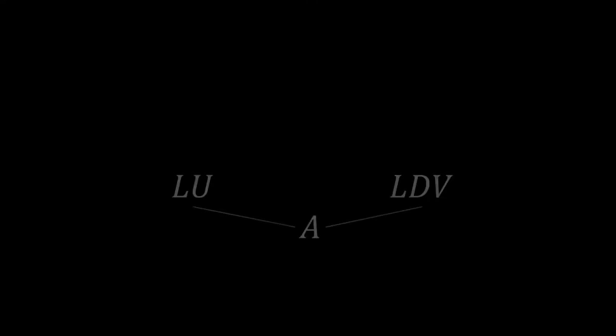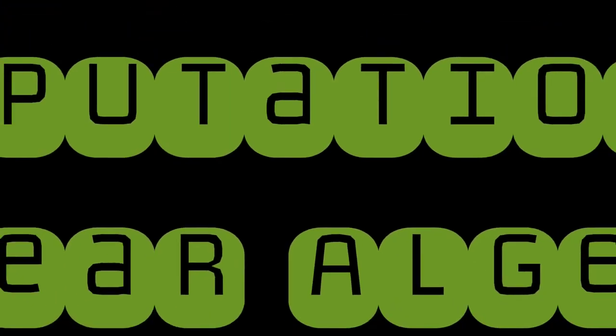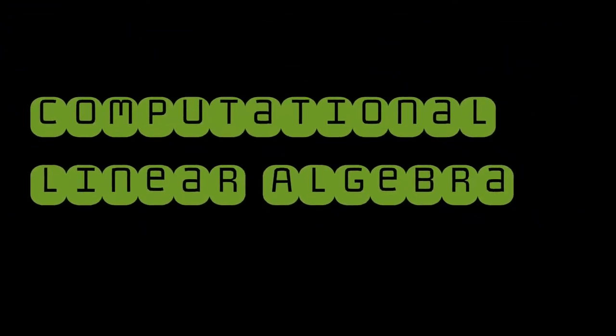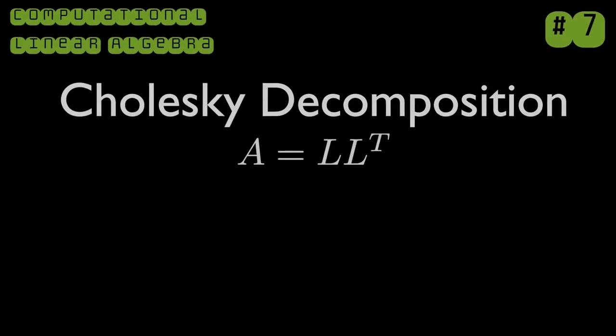So far in our discussions of matrix decompositions, we've covered the LU and LDU matrix decompositions — two general ways to decompose a matrix into either two or three matrices. But there are higher-level variants of these more general decompositions that provide certain improvements or benefits. One such variant of the LU decomposition is the topic of today's video. Welcome to the 7th episode in this Computational Linear Algebra series, where we are going to be discussing the Cholesky decomposition.